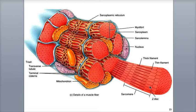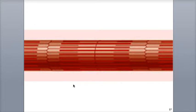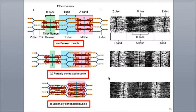Remember that the Z-discs have a zigzag-like arrangement. The thick and thin filaments overlap each other in regions of the sarcomere, which creates the alternating dark and light banding patterns of the striations. The degree of overlap changes depending on whether the muscle is relaxed, contracted, or extended.